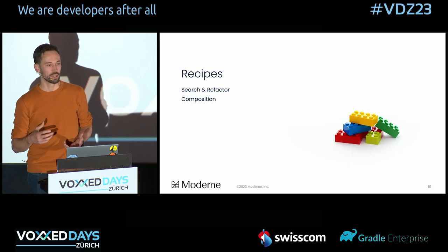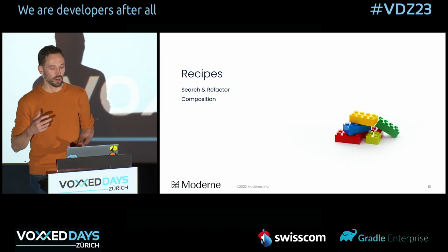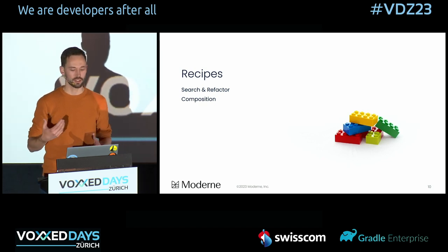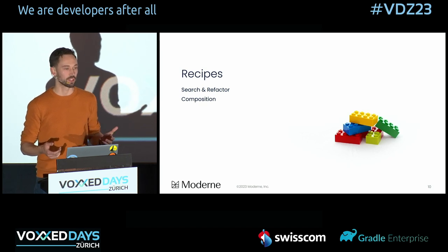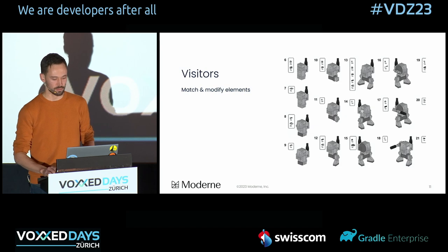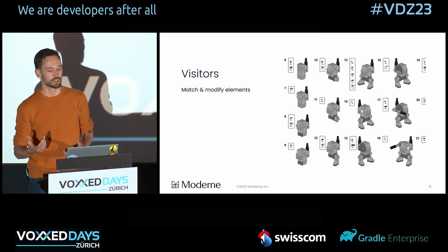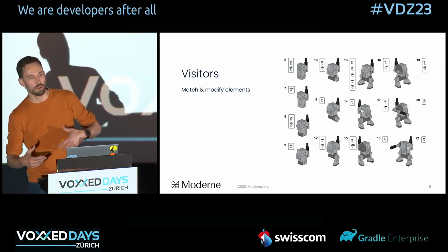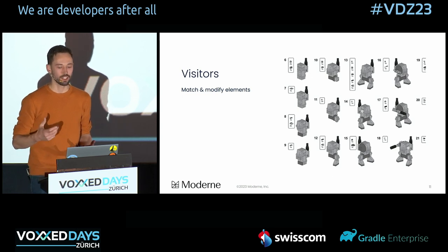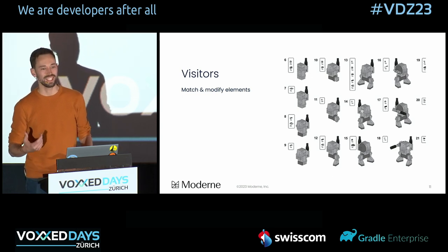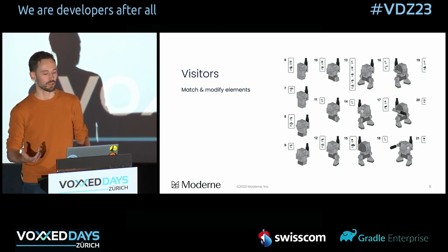You can think of these as LEGO building blocks, ready to be applied with the proper parameters. There are hundreds of these building blocks to, for instance, change types, change methods, change arguments, manipulate properties, and alter dependencies and plugins. Individual recipes are implemented as Java visitors that first match and then modify elements of the lossless semantic tree. There are plenty of examples available, but note that you only need a dedicated Java visitor when none of the existing recipes can already achieve your goals.